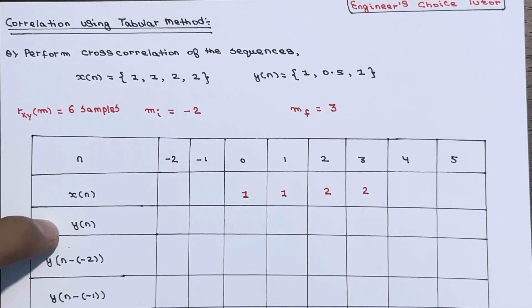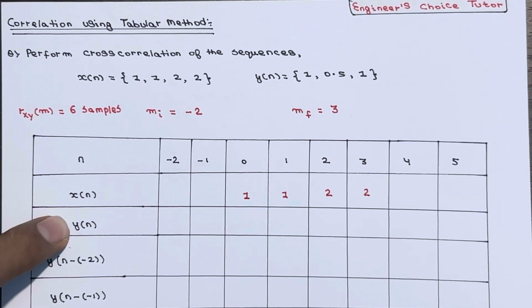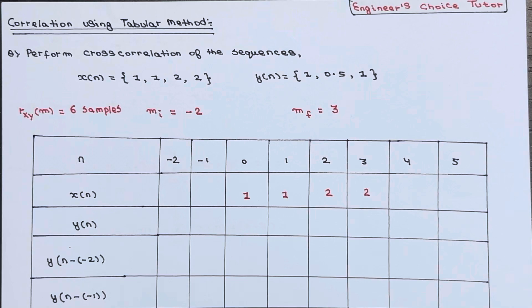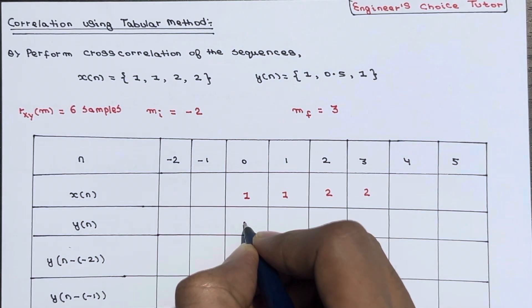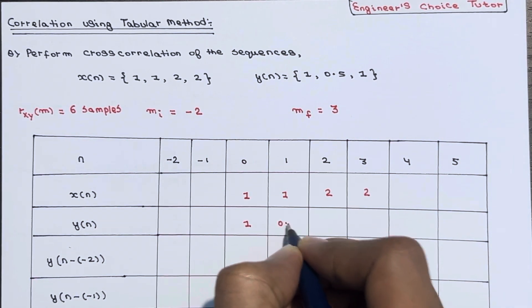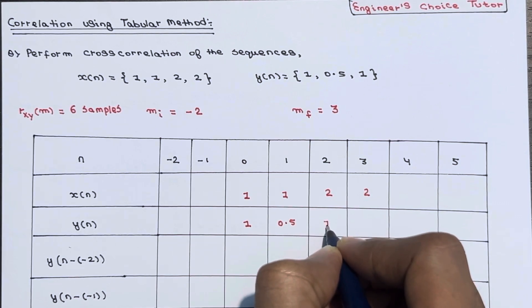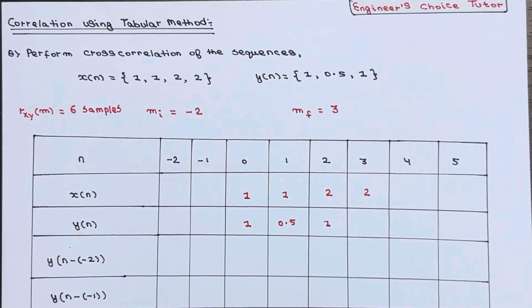Now tabulate y(n). y(n) also starts from n equals zero and has three samples: 1, 0.5, and 1 — so one, zero point five, and one. Make a note that the unfilled boxes in the table are considered as zero.